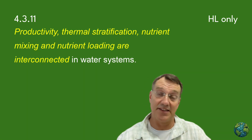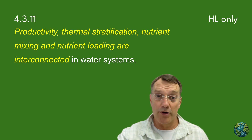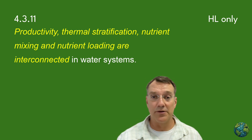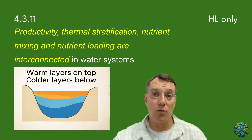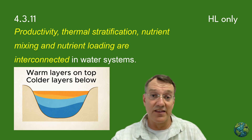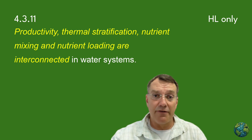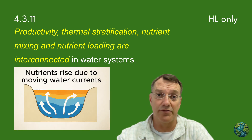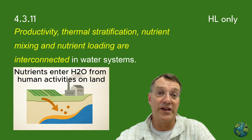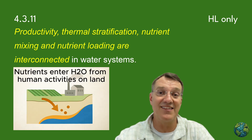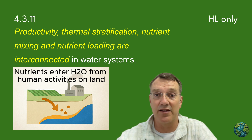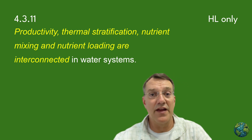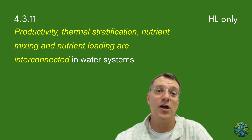In aquatic ecosystems, as in all ecosystems, everything is connected to everything else. Productivity — the amount of life that water can support — depends on several key factors working together. Thermal stratification occurs when warm water sits on top of cold water, creating layers that don't mix easily, which affects how nutrients move through the water column. Nutrient mixing brings essential elements like nitrogen and phosphorus to the surface where phytoplankton can use them. Nutrient loading refers to how much of these vital nutrients enter the system from sources like rivers or human activities. When these processes work together effectively, they create highly productive marine environments that can support large fish populations and ultimately human food systems.